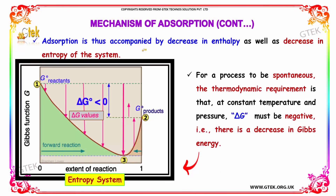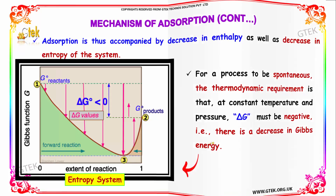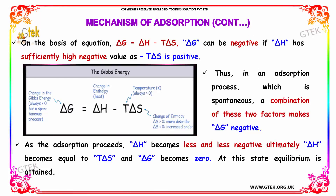Adsorption is thus accompanied by a decrease in enthalpy as well as a decrease in the entropy of the system. For a process to be spontaneous, the thermodynamic requirement is that at constant temperature and pressure, delta G must be negative, meaning there is a decrease in Gibbs energy. On the basis of the equation delta G = delta H minus T times delta S, delta G can be negative if delta H has a sufficiently high negative value, since minus T times delta S is positive. Thus, in a spontaneous adsorption process, a combination of these two factors makes delta G negative.